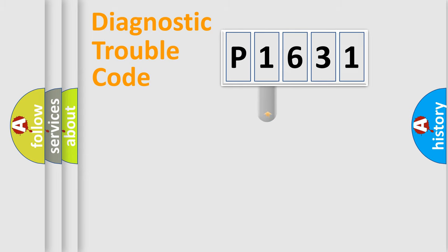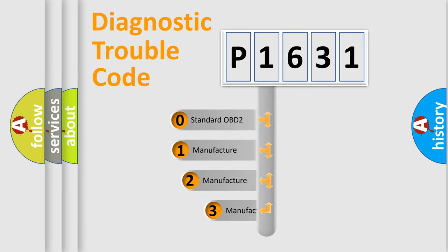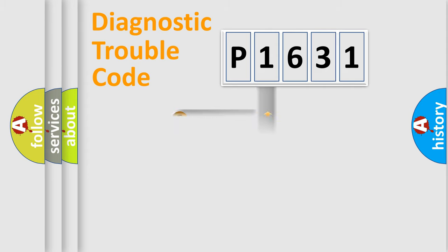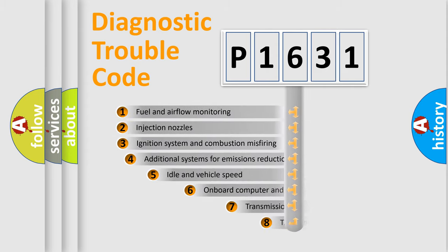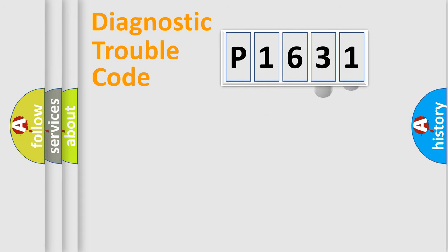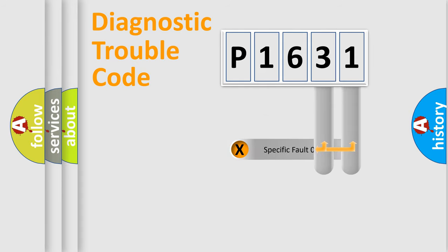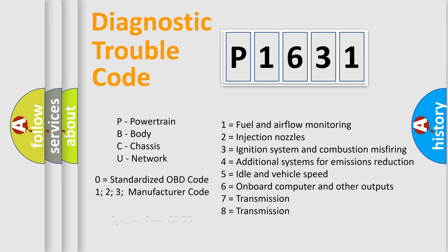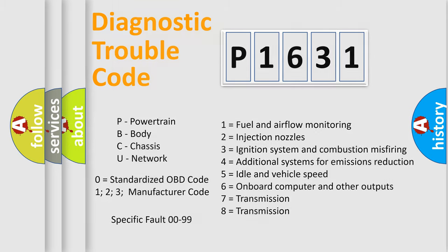This distribution is defined in the first character of the code. If the second character is expressed as zero, it is a standardized error. In the case of numbers 1, 2, or 3, it is a manufacturer-specific error. The third character specifies a subset of errors. This division is valid only for the standardized DTC code, and only the last two characters define the specific fault of the group.